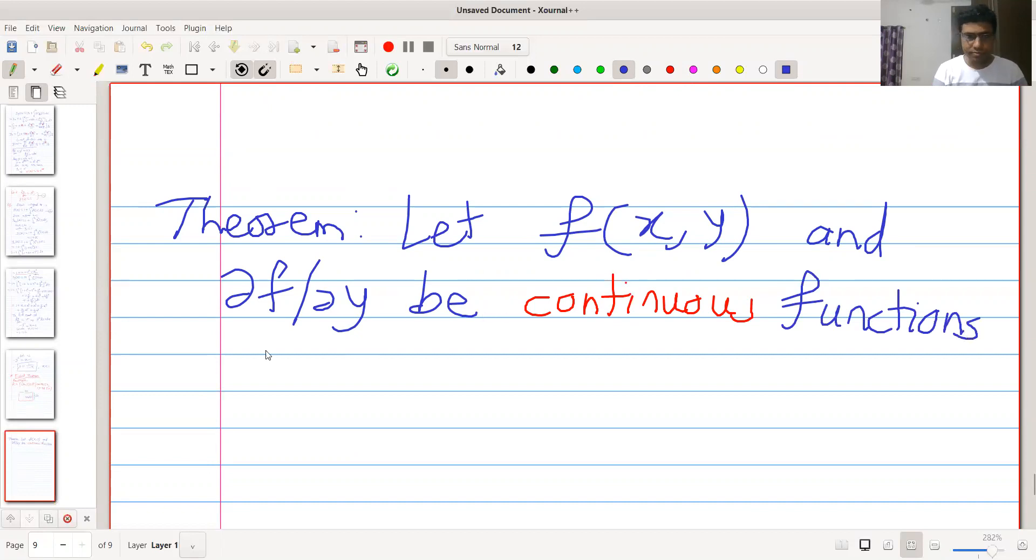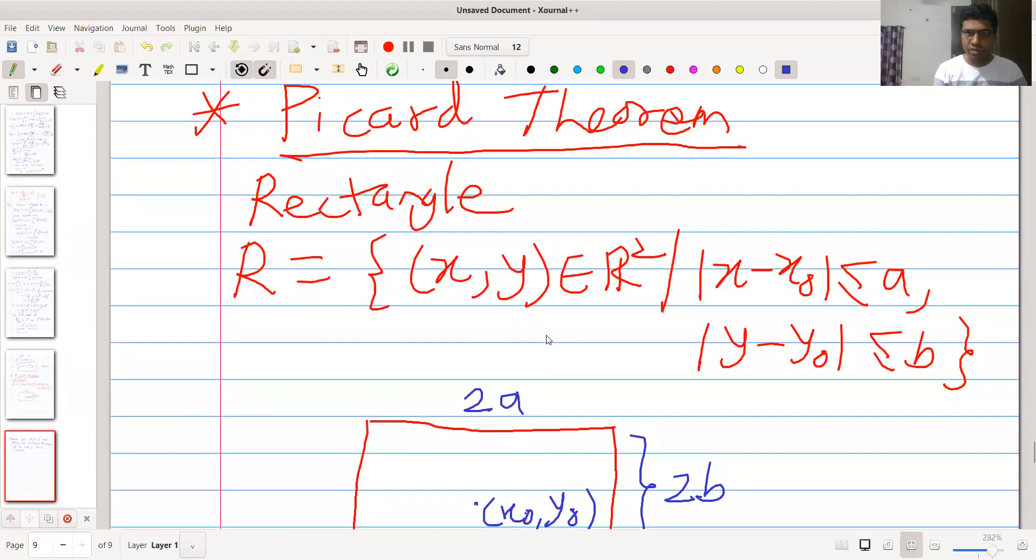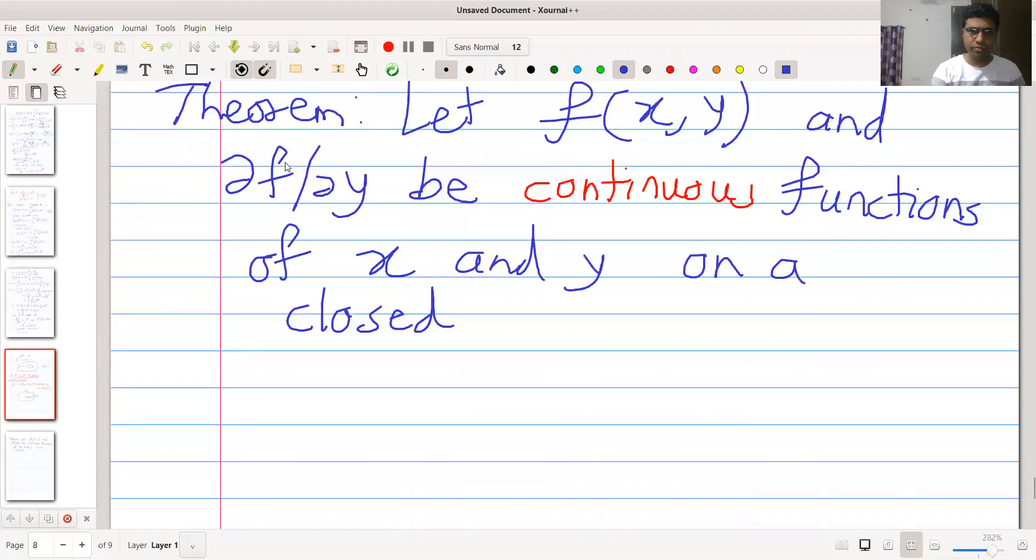of x and y on a closed rectangle. We are saying it is a closed rectangle because the boundaries are included. It is because of this less than or equal to sign. If it is strictly less than, then it is open rectangle. So this is closed rectangle.